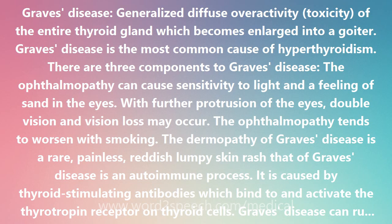There are well-established associations with certain HLA types. Linkage analysis has identified gene loci on chromosomes 14q31, 20q11.2, and Xq21 that are associated with susceptibility to Graves' disease. Factors that can trigger the onset of Graves' disease include stress, smoking, radiation to the neck, medications such as interleukin-2 and interferon-alpha, and infectious organisms such as viruses.